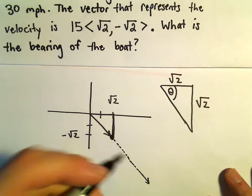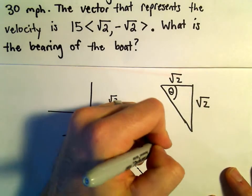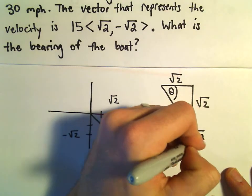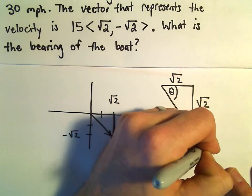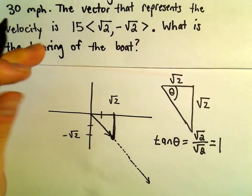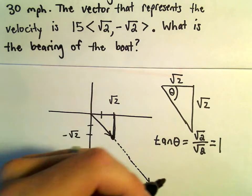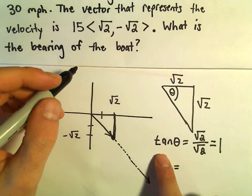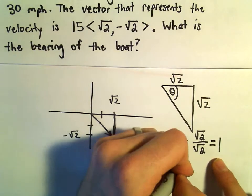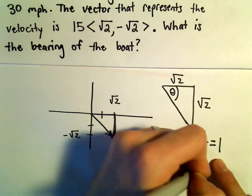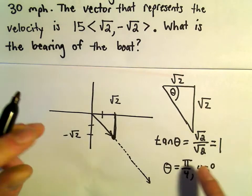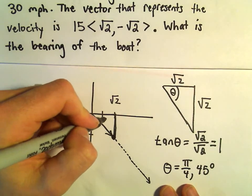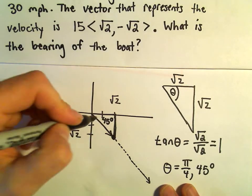Well, to solve for theta, all I'm going to do is just use tangent. So tangent is opposite over adjacent, so we'll get root 2 over root 2, which is just going to be 1. You could always use inverse tangent of both sides, but I know this is an angle that I know. Tangent of pi over 4, or equivalently 45 degrees. Tangent of 45 degrees gives us 1. So now I know this little angle inside of here is 45 degrees.